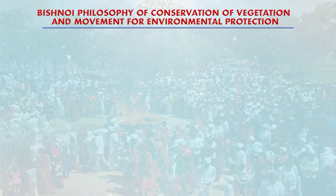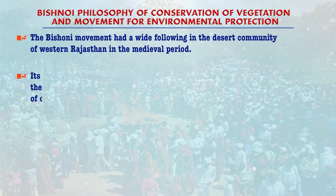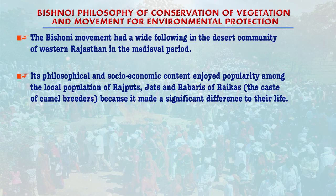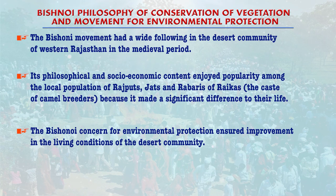The Bishnoi movement had a wide following in the desert community of western Rajasthan in the medieval period. Its philosophical and socio-economic content enjoyed popularity among the local population of Rajputs, Jats, and Rabaris or Raikas — that is, the camel breeder caste of western Rajasthan. Following Bishnoi philosophy and teachings made a significant difference to their lives. The Bishnoi concern for environmental protection ensured improvement in the living conditions of the desert community.